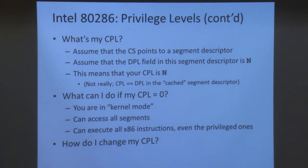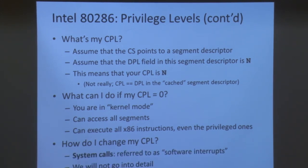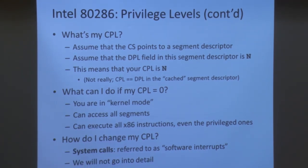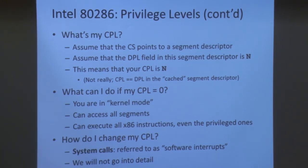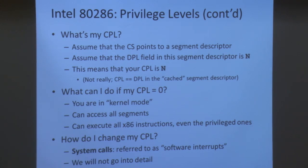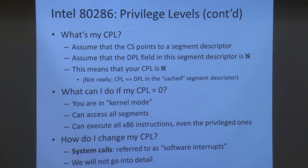How can you change your privilege level? Usually this is done through system calls, also referred to as software interrupts. While a program is running and wants to perform some sensitive system task, it asks the operating system to do it on its behalf by invoking a system call. As part of the system call, the operating system changes the CPL to kernel mode, performs the operation, then returns to user land by setting the CPL back to three.